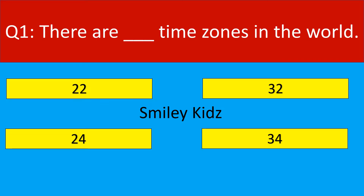Question number 1. There are how many time zones in the world? Your options are 22, 32, 24, 34.